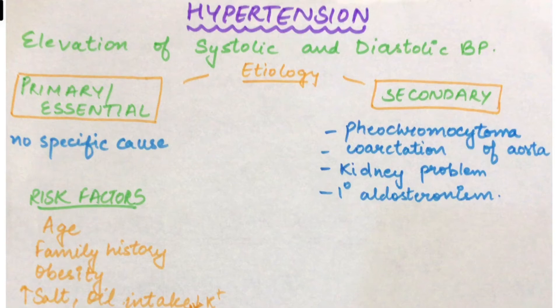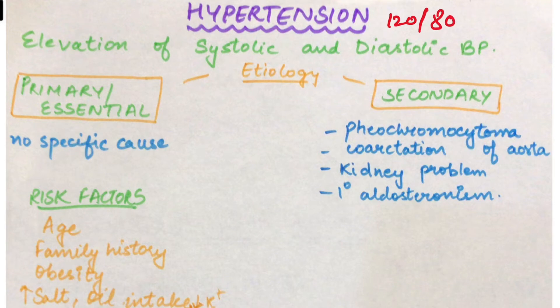Hello everyone. Today we'll talk about hypertension. Hypertension ka matlab hota hai ki humara systolic ya diastolic blood pressure elevate ho jaye. Normally hum 120 by 80 ko normal blood pressure consider karte hai. Jo hum 120 oopar likhte hai that is the systolic blood pressure and 80 is the diastolic blood pressure.